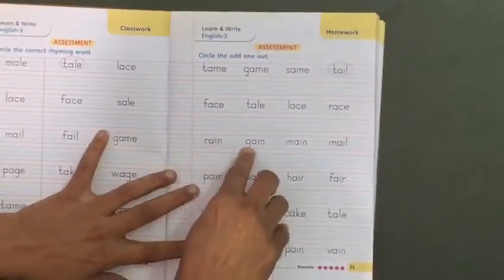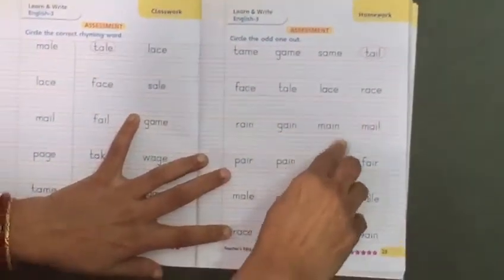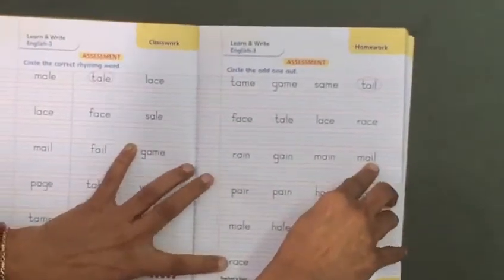Rain, gain, main, male. Male is the odd one out.